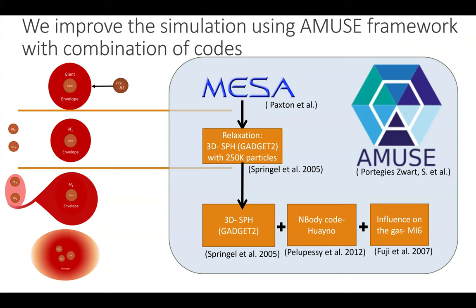For the circumstellar case, we ran everything via the AMUSE framework, which allows us to combine multiple codes together in a fluid way. We used the stellar evolution code MESA to evolve our giant, then converted it into a 3D SPH code used with Gadget-2. After a relaxation stage, we coupled this code with two other codes for better accuracy of the motion of the inner binary. We also ran a suite of simulations to test correlations between the initial configurations of the system and the final outcomes.